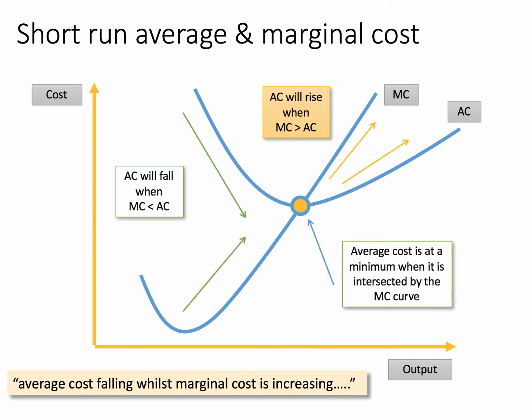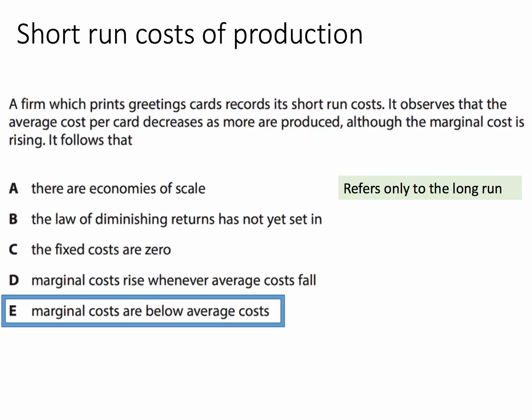So: average cost will fall when marginal cost is less than average cost; average cost will rise when marginal cost is greater than average cost; and average cost is at its minimum when it's intercepted by the marginal cost curve. Let's double-check our answer by looking at the other options — A, B, C, and D.